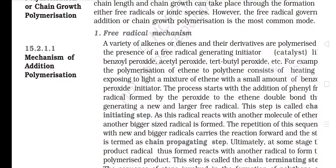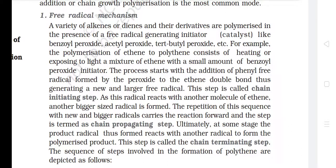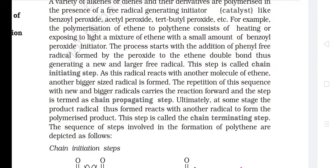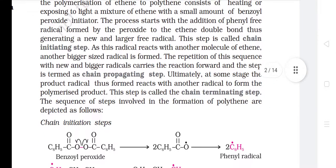Mechanism of Addition Polymerization — Free Radical Mechanism. A variety of alkenes or dienes and their derivatives are polymerized in the presence of a free radical generating initiator catalyst like benzoyl peroxide, acetyl peroxide, tert-butyl peroxide, etc. For example, the polymerization of ethene to polyethene consists of heating or exposing to light a mixture of ethene with a small amount of benzoyl peroxide initiator. The process starts with the addition of a phenyl free radical, formed by the peroxide, to the ethene double bond, generating a new and larger free radical — this step is called the chain initiating step. As this radical reacts with another molecule of ethene, another bigger radical is formed; the repetition of this sequence is termed the chain propagating step.